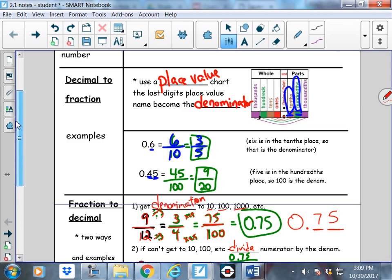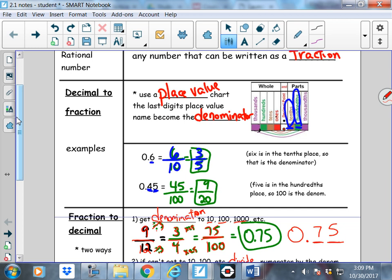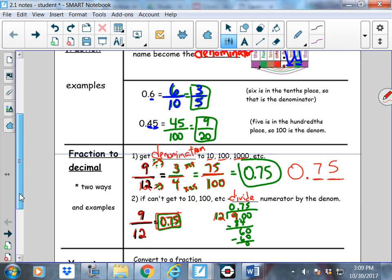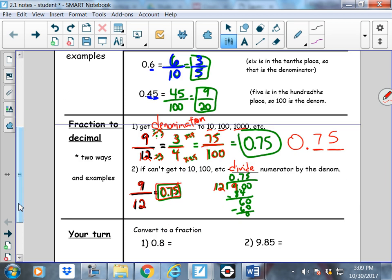So, quick review. Decimals to fractions. Look at the place value. Write it with a ten, hundred, thousand on the bottom. Then simplify it if you can. Fractions to decimals. Try to get it to one hundred, ten, one thousand on the bottom. So you can convert it into a decimal easily. If you can't, then you must do the division.